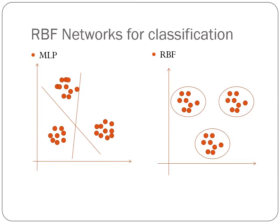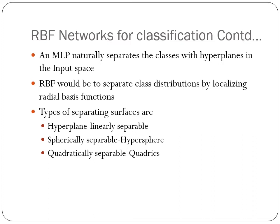Now, how is it different from a multi-layer perceptron network? In the case of multi-layer perceptron network, we try to find out the separating line between each of the group of points. But whereas in RBF, we try to cluster. An MLP naturally separates the classes with hyperplanes in the input space. Your RBF would separate class distributions by localizing the radial basis functions. There are three types of separating hyperplanes: hyperplane linearly separable, spherically separable hyperplane, and quadratically hyperplane.